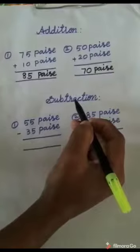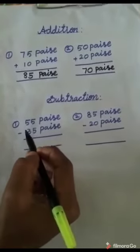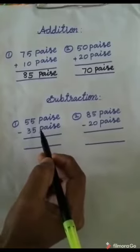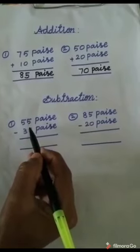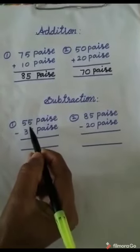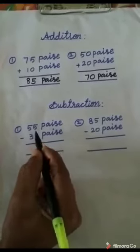Next, we will see subtraction of money. See the first example: 55 paisa minus 35 paisa. See the one's place. When we subtract the same number, the answer is 0. So 5 minus 5 equals 0.